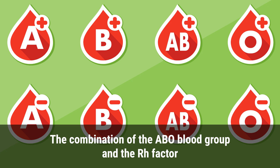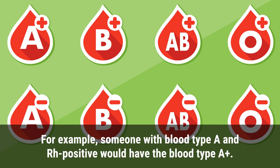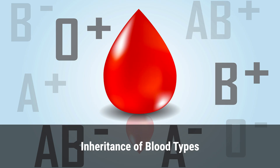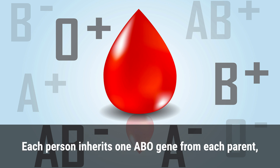The combination of the ABO blood group and the Rh factor determines an individual's complete blood type. For example, someone with blood type A and Rh positive would have the blood type A positive. Blood type inheritance is determined by genetic factors.